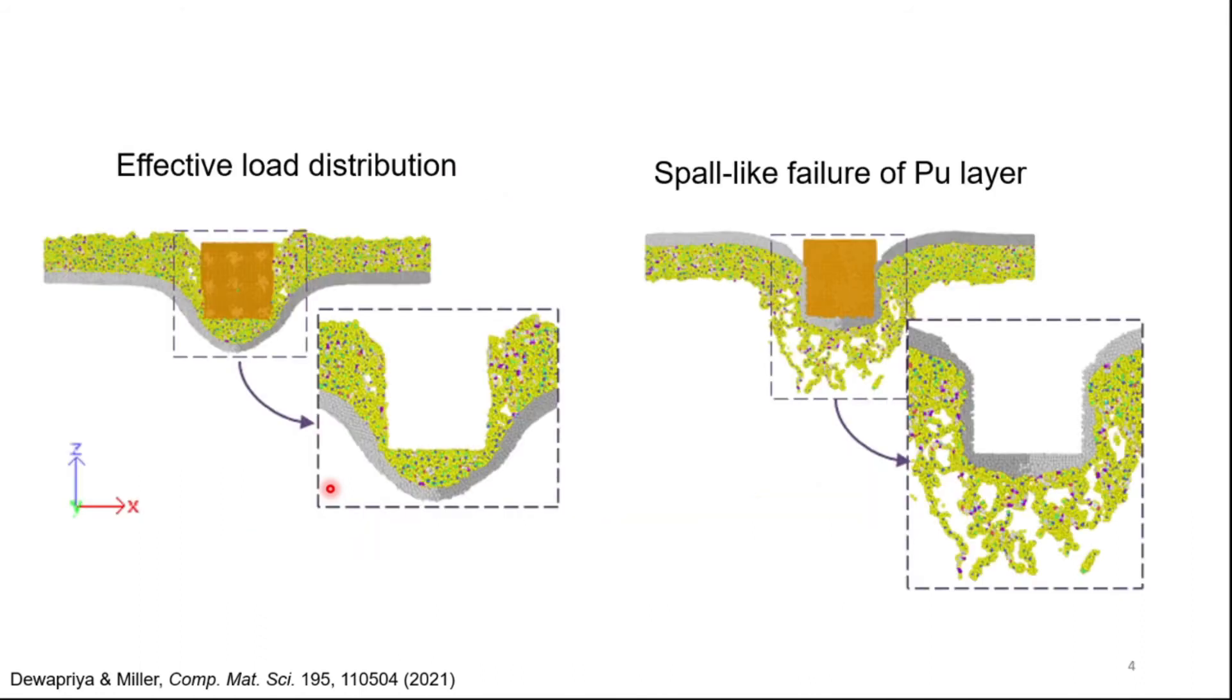For example, we observe the polymer layer on the strike phase area leads to an effective distribution of impact loading to the underneath aluminum layer. In contrast, the shock wave propagating through the aluminum layer generates a spall-like failure in the polymer layer on the back face. This observation motivated us to further investigate the spallation mechanism at the nanoscale.